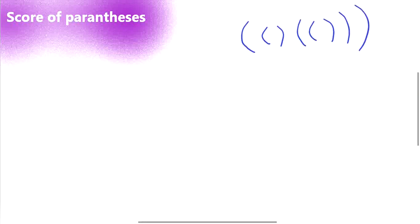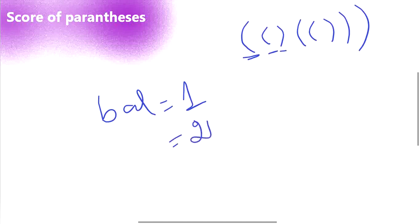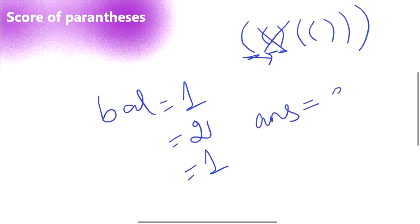Let's understand this with another example. The first parenthesis is open, so balance is 1. The second is also open, so balance is 2. The third parenthesis is a closed parenthesis, so we decrement balance to 1. Since we have reached a closed bracket at depth 1, we calculate our score: answer so far is 2 power 1, because the depth is 1. So it is going to be 2.